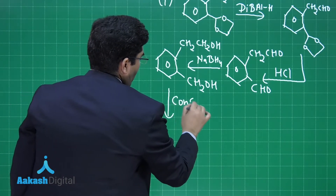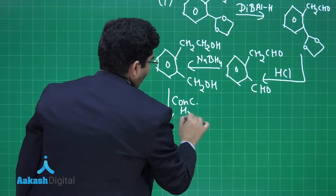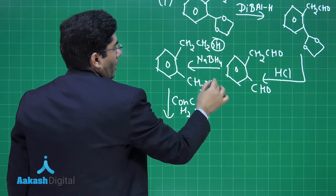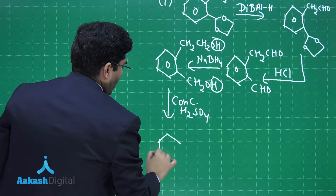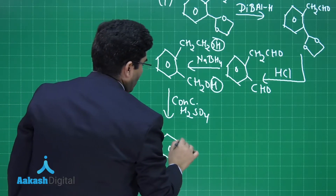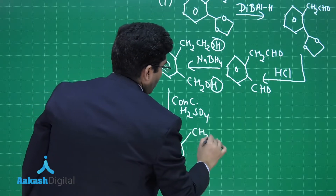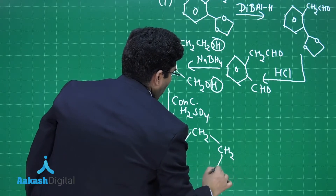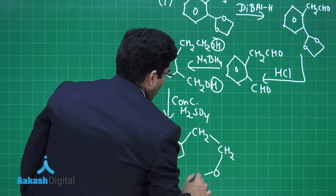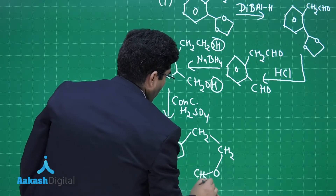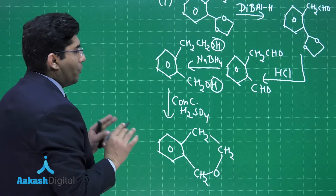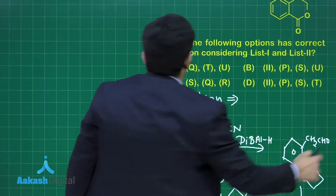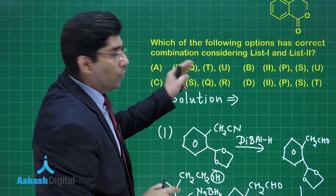Concentrated H₂SO₄ dehydrates it — OH goes from here and H goes from there, eliminating H₂O. We get the final product as CH₂CH₂OCH₂ (a cyclic ether). This is our final product. Now let us see what the question is asking: in the first reaction, we should get Q, T, and U.